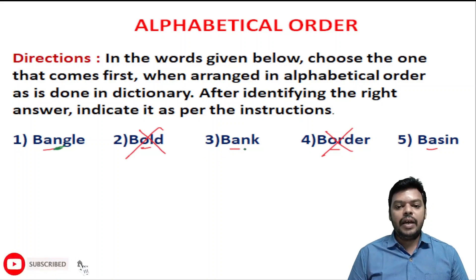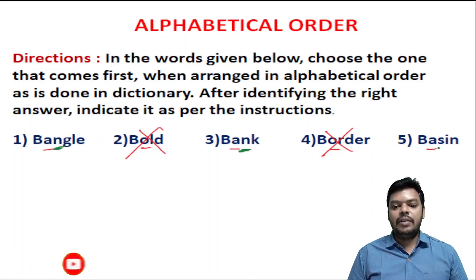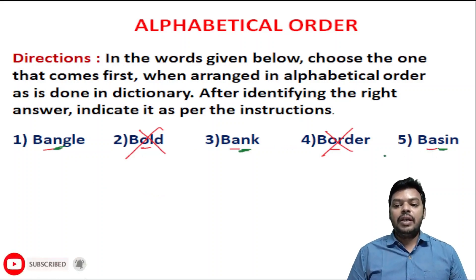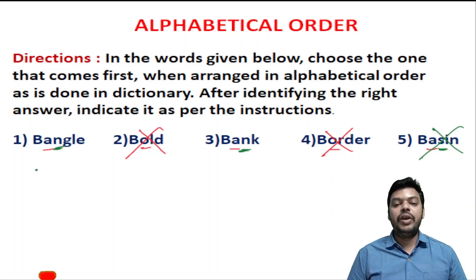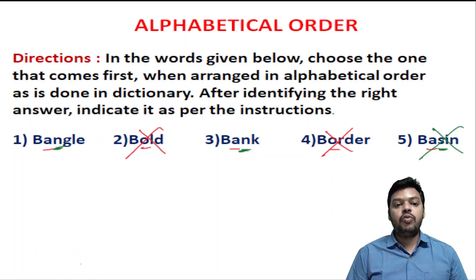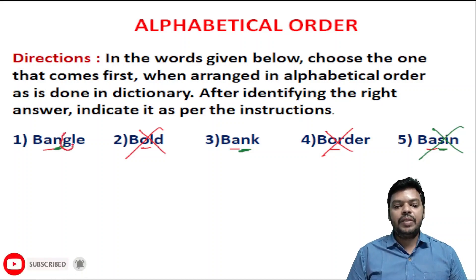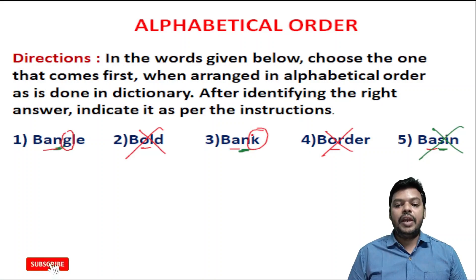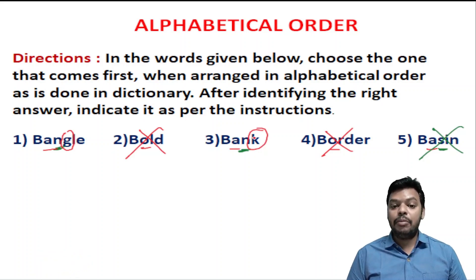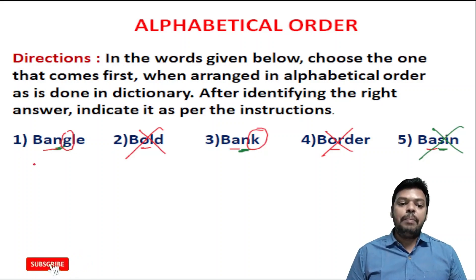Here, for example, comparing Bank and Bang — the first three letters B, A, N are the same. So we check the fourth alphabet: the first word has G, and Bank has K. Comparing G and K in alphabetical order, G comes first, so Bang is the right answer.